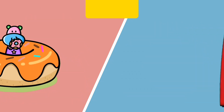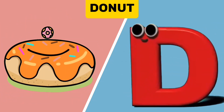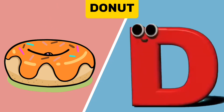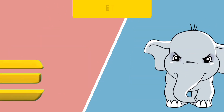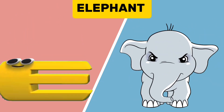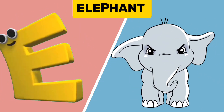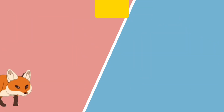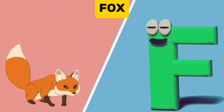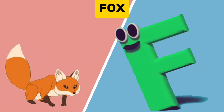D is for Donut. D, D. Donut. E is for Elephant. E, E. Elephant. F is for Fox. F, F. Fox.